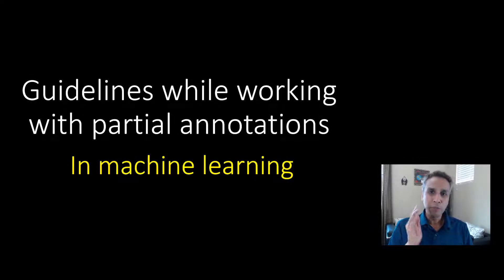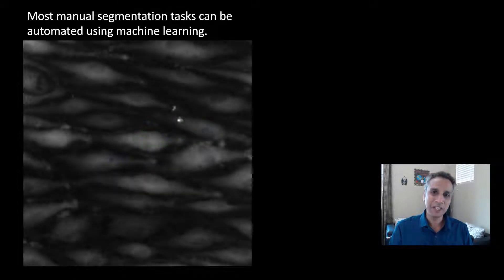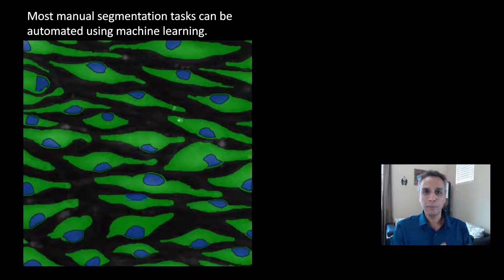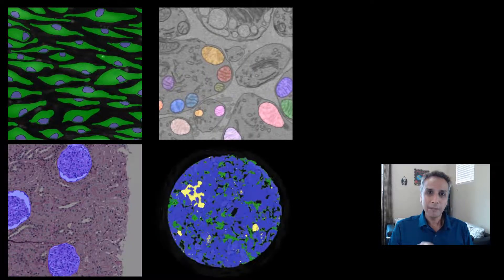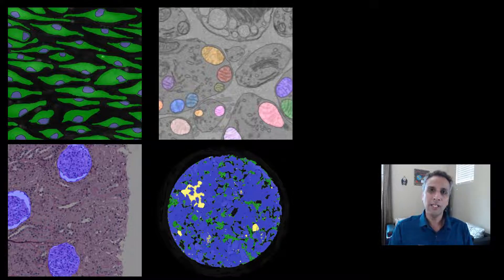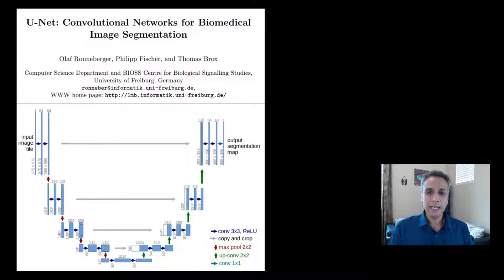In machine learning, you're training a machine to perform repetitive tasks for you. And if you have ever annotated or segmented your images in a manual way by painting the pixels, then you'll definitely appreciate a machine's help in automating this task. This process of segmenting every pixel in an image is referred to as semantic segmentation by the deep learning community, and there are many deep learning-based algorithms designed for it, but the one that stands out is UNet — especially effective at segmenting biological images.